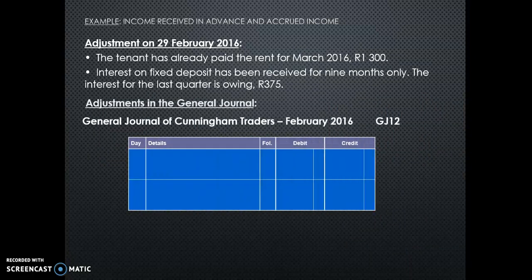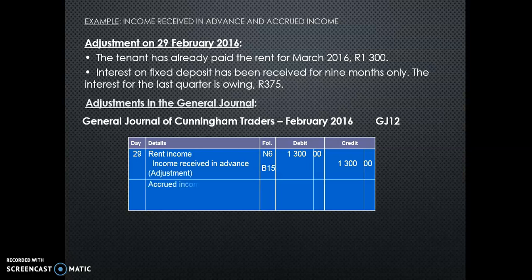So in the general journal, remember the first entry is the account being debited. For rent income, it must decrease. It is an income which is normally on the credit side, but we are putting it on the debit side to decrease it. The credit is income received in advance, which is a liability, because I owe that to the person who has paid me.